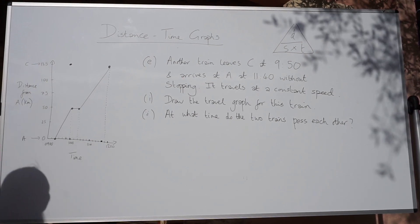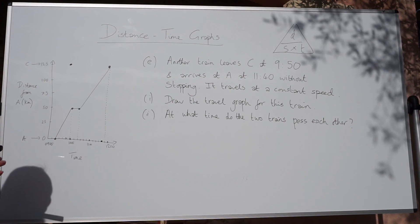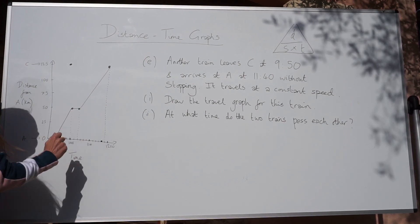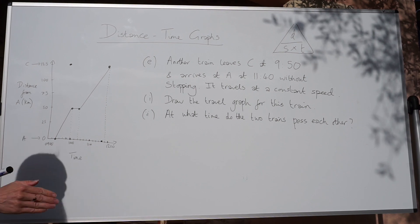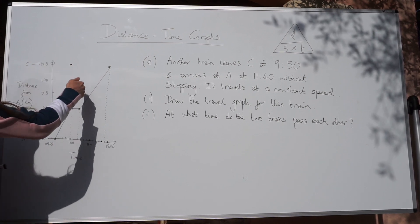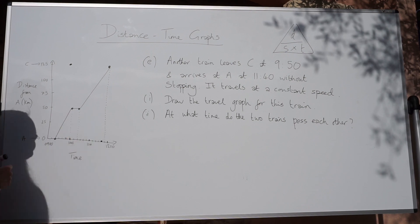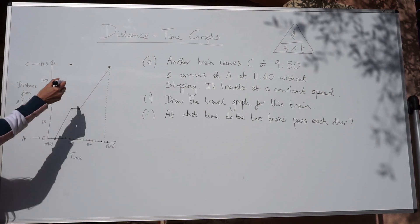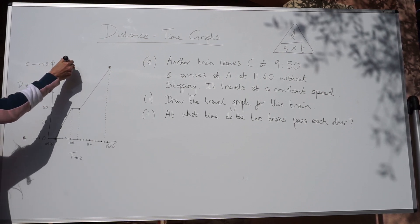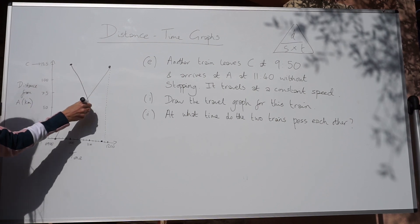And it tells us in the question that the train doesn't stop, so there's no horizontal line. It also travels at a constant speed. So this line, to join up the two points, is going to have the same gradient all the way through. So you need to take a ruler and your pencil and join those points up.